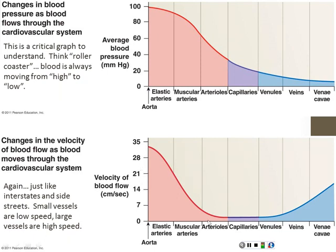Another property is velocity. As we go through the system, the speed of blood changes. In large vessels like the aorta and vena cava, blood moves very fast; as vessels get smaller, speed decreases — just like interstates allow high speeds while side streets are slow. This happens because as vessels get smaller, there are more and more of them. Like a river passing through a canyon moving fast, then spreading onto a broad plain and slowing way down: velocity is highest in bigger vessels and lowest in smaller ones because there are so many more of them.